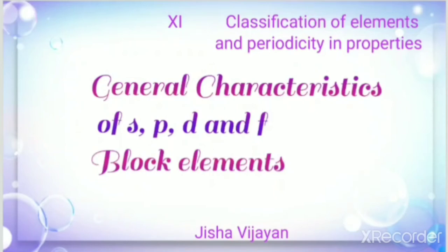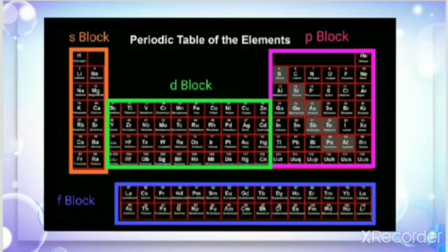Hello students, let us discuss the general characteristics of S, P, D and F block elements in the modern periodic table. The long form of periodic table, which we have already discussed in the previous video, is divided into four blocks: S block, P block, D block and F block. Let us find out what are the different characteristic features of these elements.